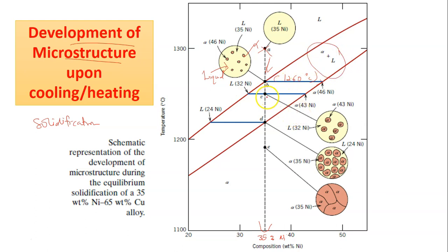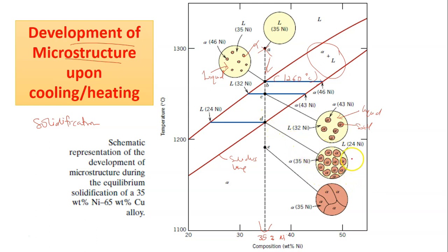The microstructure that develops at point C shows that the small solid alpha grains are getting bigger and bigger, while liquid still remains inside. Moving further down to point D, it reaches the solidus line. At point D, the alpha solid is getting much bigger and the liquid area is getting smaller, meaning there is more solid compared to liquid.